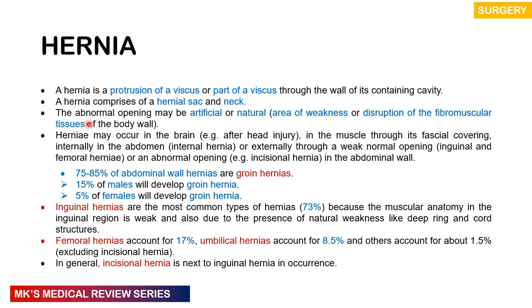75% to about 85% of abdominal wall hernias are going to be groin hernias, which is why I'm going to discuss those in this lecture. 15% of males would develop groin hernias and 5% of females. Inguinal hernia is by far the most common type of hernia, accounting for roughly around 73%, and that's only because of the anatomy in the area.